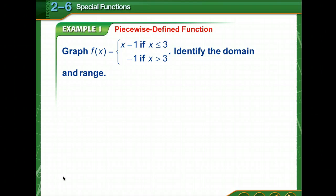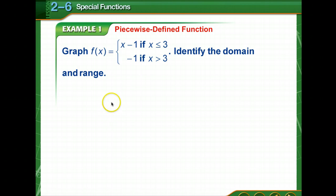Some things we need to know: a function that is written using two or more expressions is called a piecewise defined function. On the graph of a piecewise defined function, a dot indicates the point is included in the graph — just like when graphing an inequality — and an open circle indicates that the point is not included in the graph.